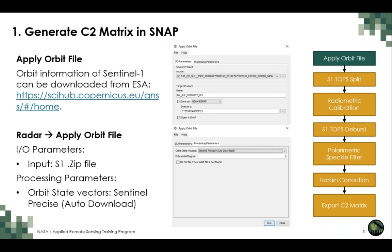To apply the orbit file in SNAP, select the Radar dropdown menu and select 'Apply Orbit File.' The input should be your downloaded SLC .zip file; specify an output folder and target file name. Under processing parameters, select 'Sentinel Precise Auto Download' as the orbit state vector and run the tool.